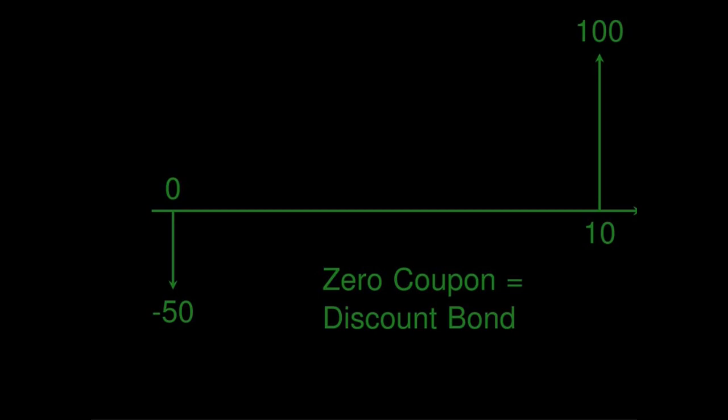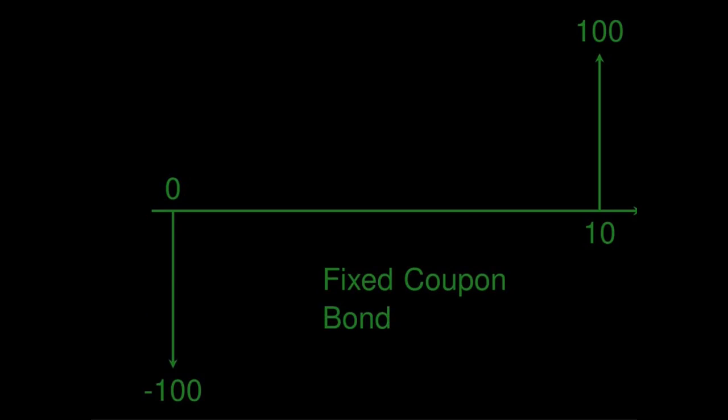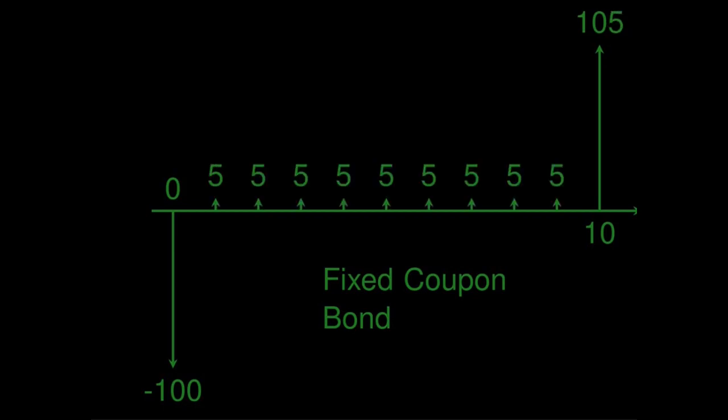The second possibility is a fixed coupon bond — a bond that is issued at 100 and pays interest in the form of a fixed coupon. Let's say that 5% fixed annual interest rate is a fair compensation for the risk of the borrower not paying back, or defaulting. We say then that the bond yields 5%. We call this interest rate the yield to maturity, or simply the yield of the bond.